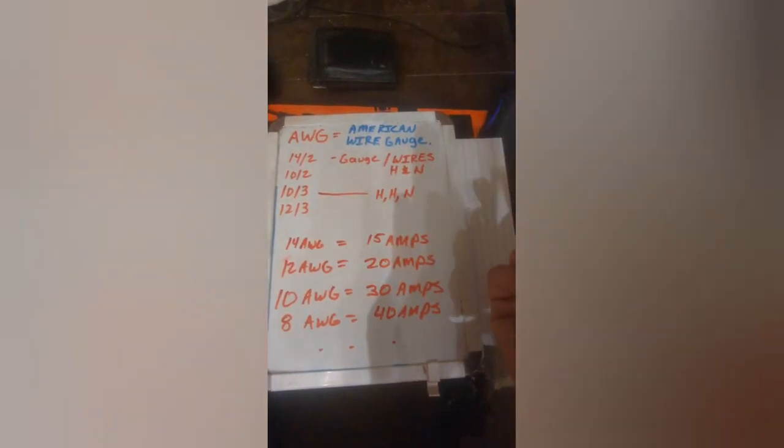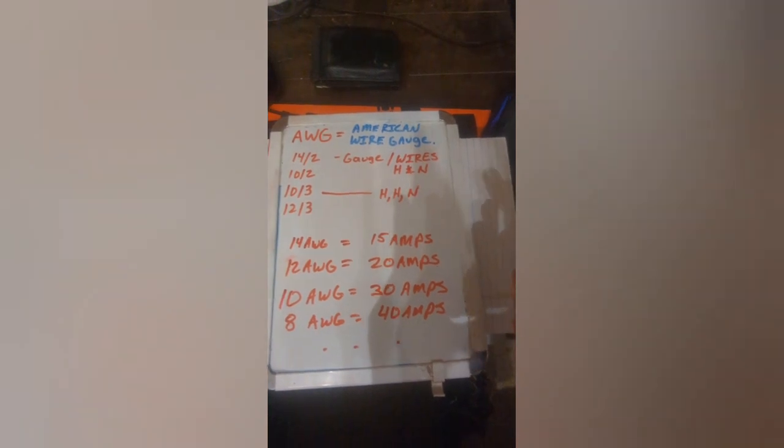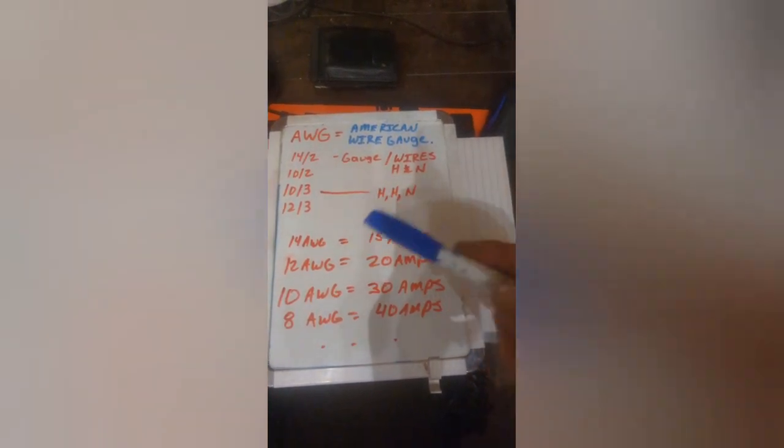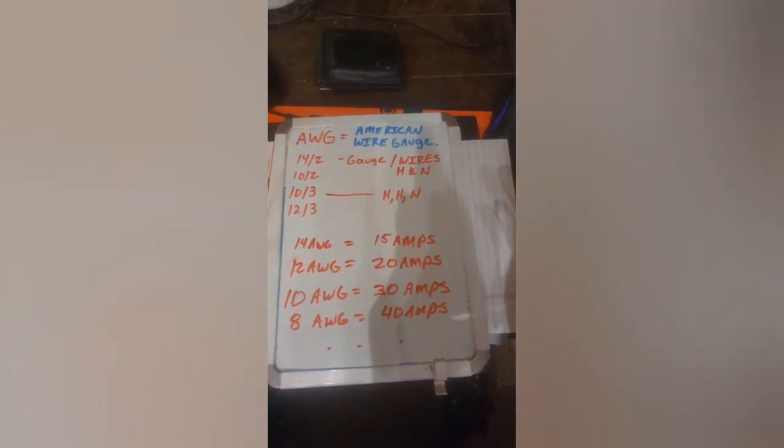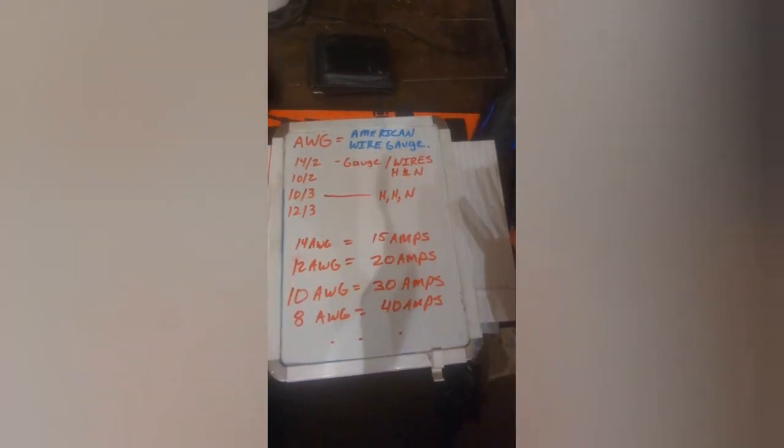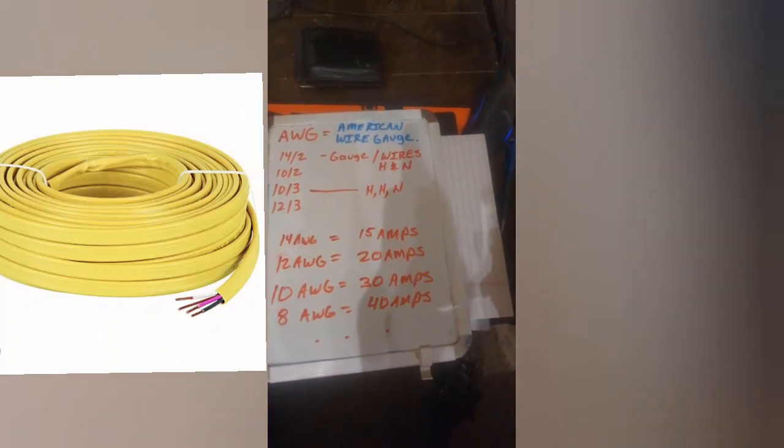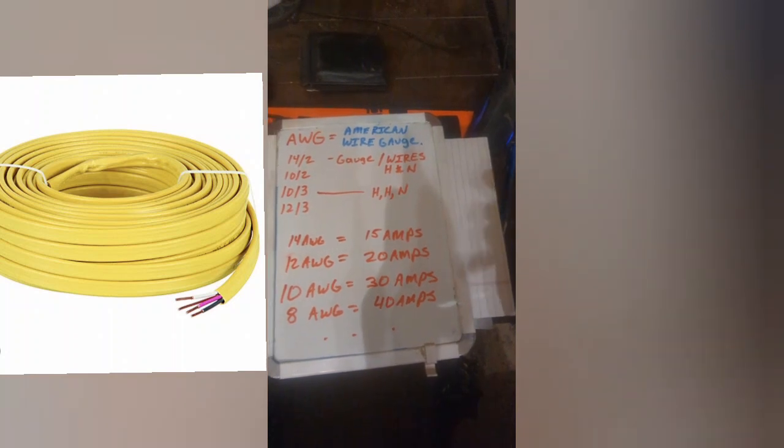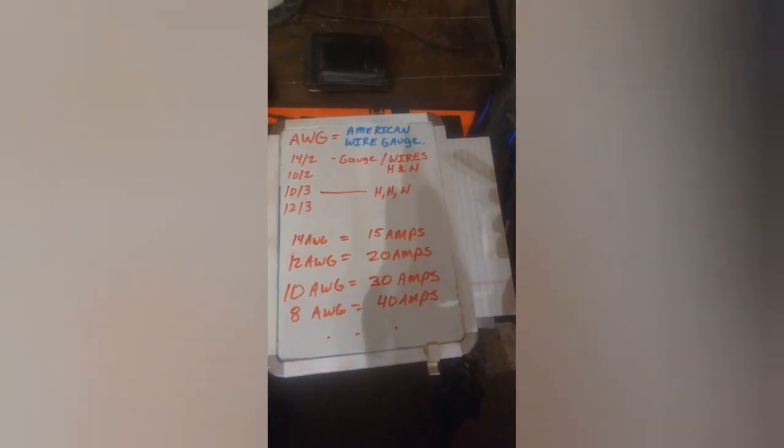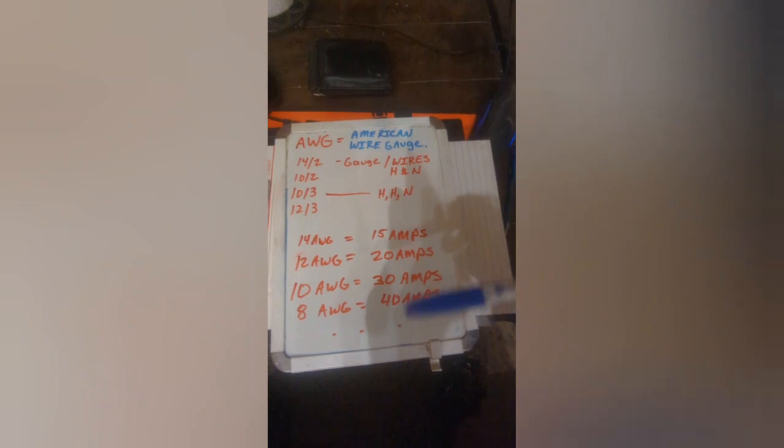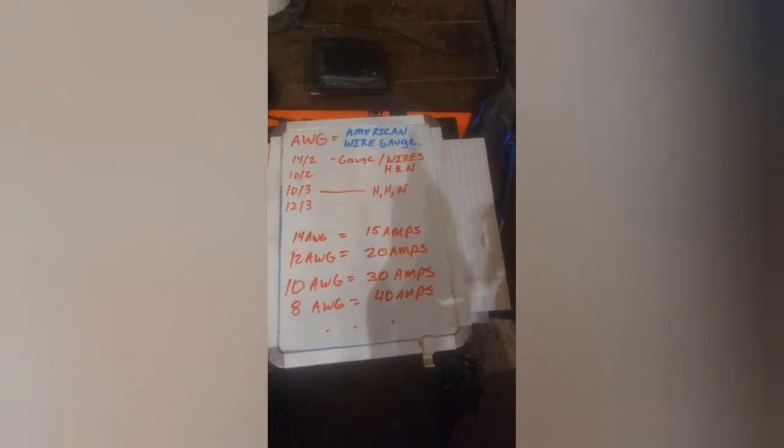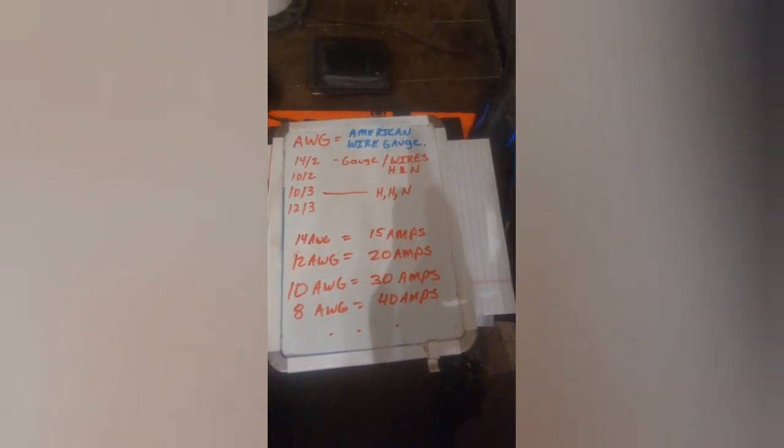And so if you go to say home depot or Lowe's and you start looking at wires to wire a circuit, I'm going to go with say Romex. That's going to be like your most common wire that you're going to see. And basically it's individual wires that are insulated with an insulator on the outside. And then those wires are also insulated on the inside. And that's what you're going to see for normal residential wiring.